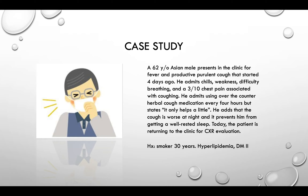He adds that the cough is worse at night and prevents him from getting a well-rested sleep. Today, the patient is returning to the clinic for chest x-ray evaluation. Patient is a smoker for 30 years. He has a history of hyperlipidemia and type 2 diabetes. He denies history of asthma, heart disease, recent travel abroad, or exposure to TB. He denies sudden weight changes, recent illnesses, or hospitalization, hemoptysis, and any other extra-pulmonary issues. Additionally, he admits that he does not visit his primary provider regularly because he is usually very healthy. He denies alcohol misuse and illicit drug use.